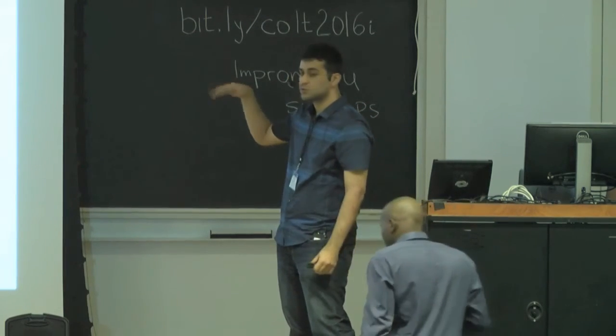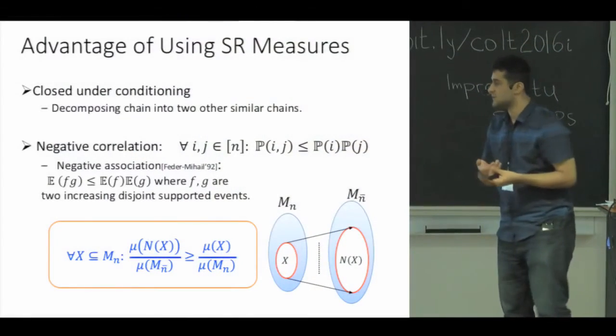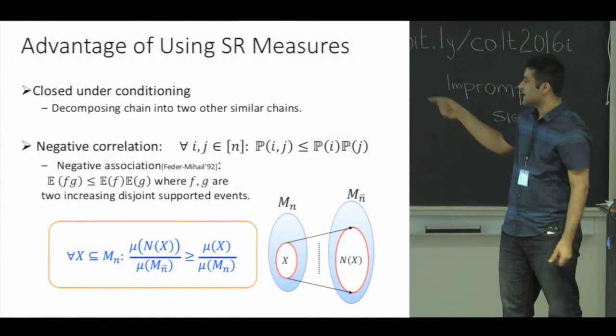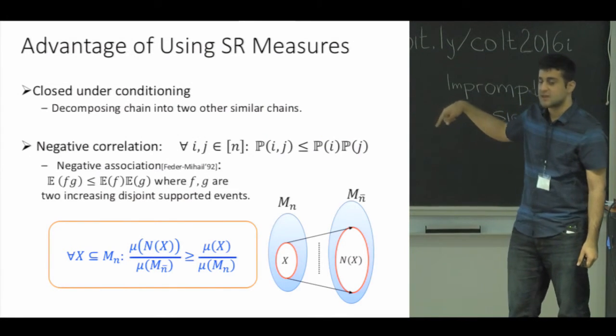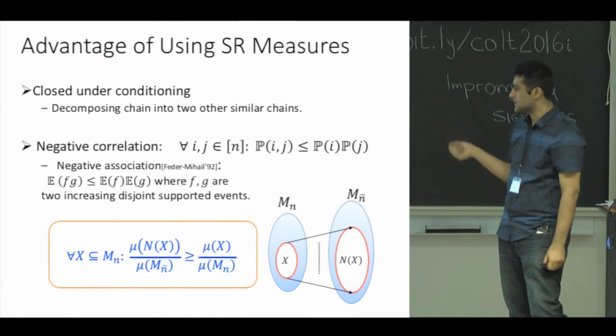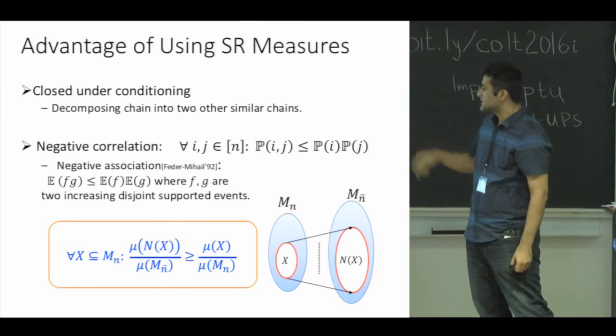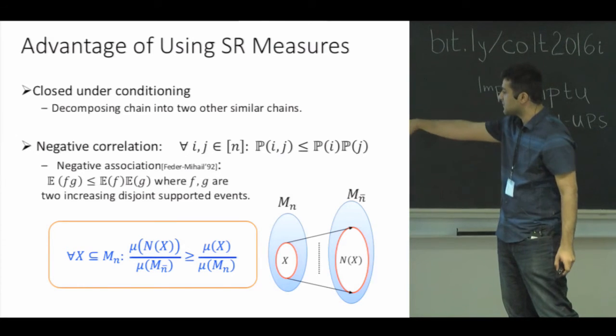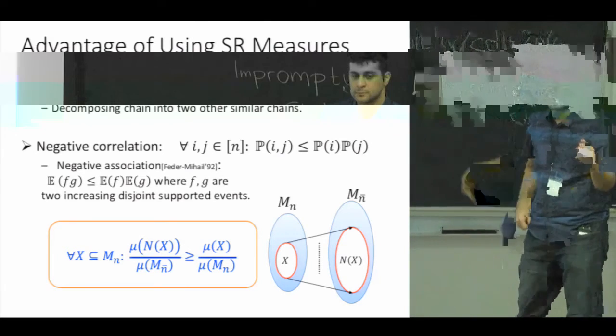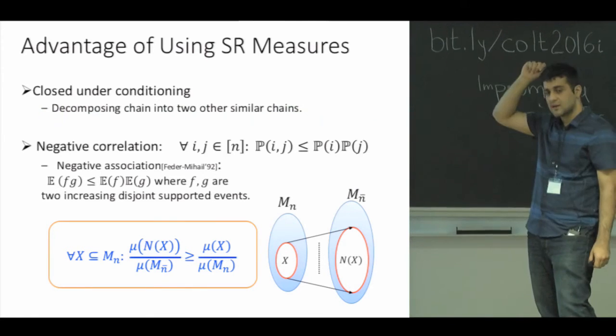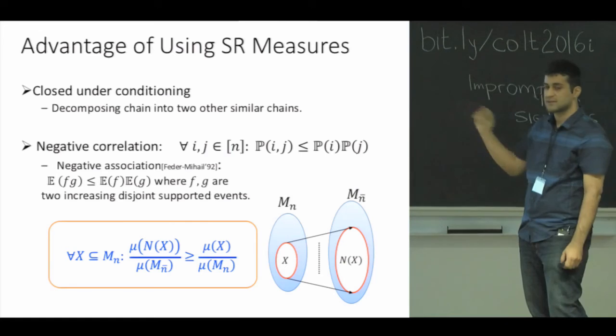Here I consider two events. Suppose that I draw a sample from the distribution, and one event is that element n, which I divided these two sets by fixing that element, is inside this subset. The other event is that the subset is a superset of one of the elements in X after removing n from X. If you rewrite this relation for negative correlation, you will get this relationship.